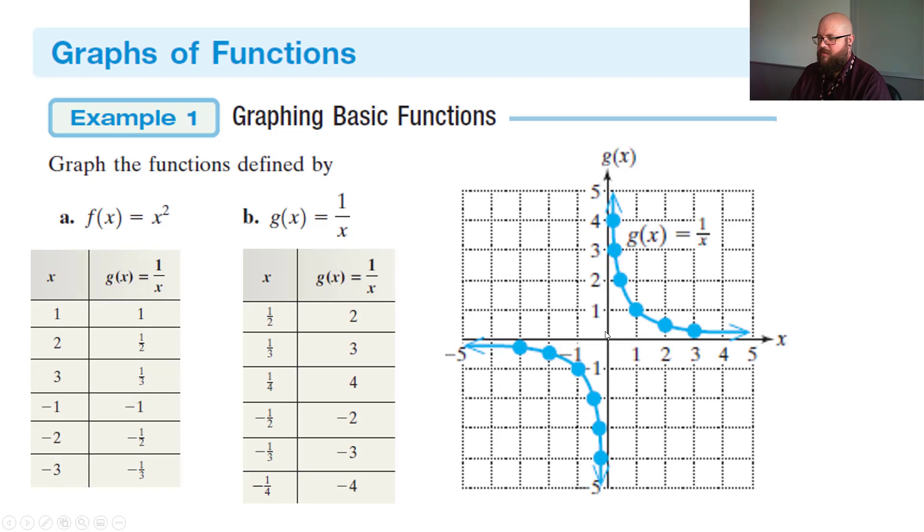And the same thing with going to the negative values, where it'll show the graph going down towards the asymptote as well on x = 0. So with this one, we have negative 1 half, which gave us 2. And negative 1 third, which gave us negative 3. And then negative 1 fourth gave us negative 4.